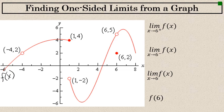Let's take a look at the limit as x approaches 6 from the right. From the right side of the graph, the graph is heading towards a point that would have a y value of 5. The limit as x approaches 6 from the right is 5.